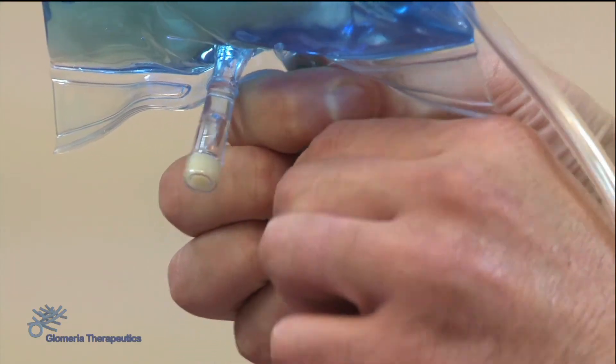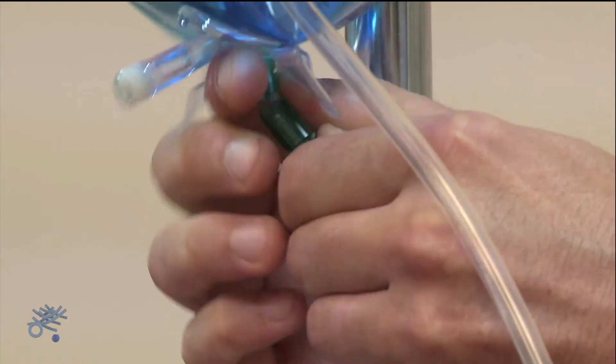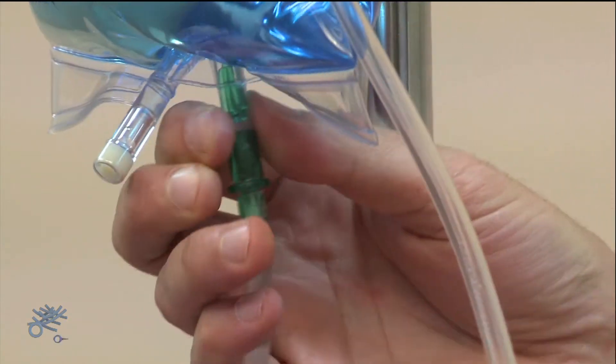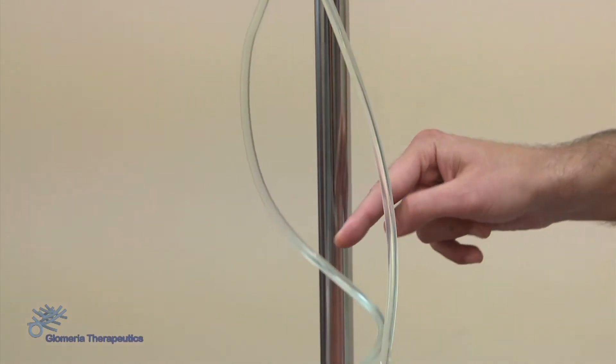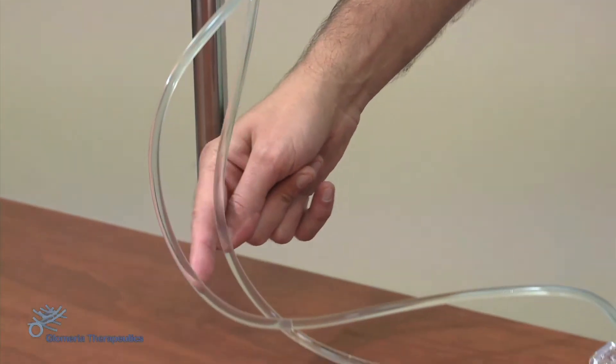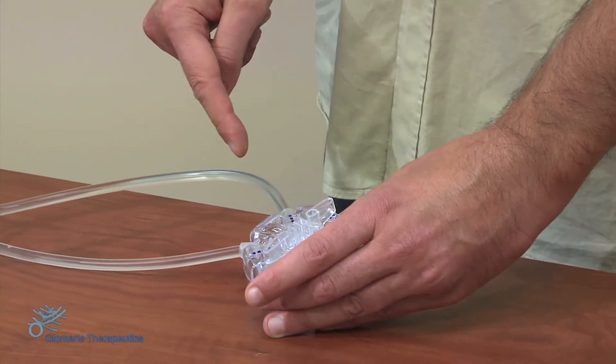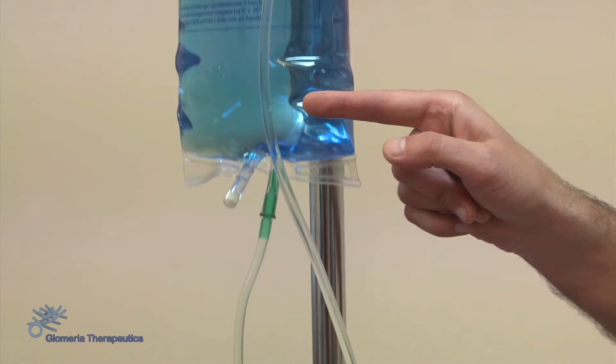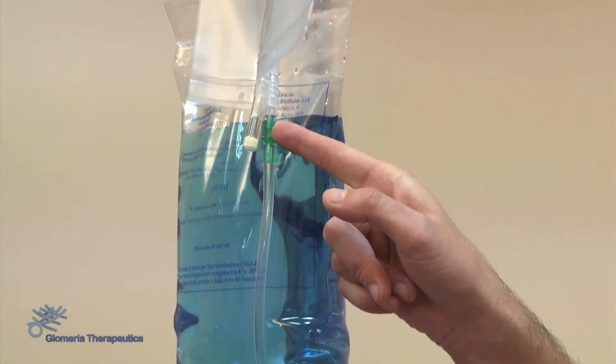Now we can manually break the cone on the empty bag, repeating the movement to be sure of its rupture. The solution now flows freely in the lines, moving towards the empty bag and pushing into it any potential air bubbles present in the tubes.